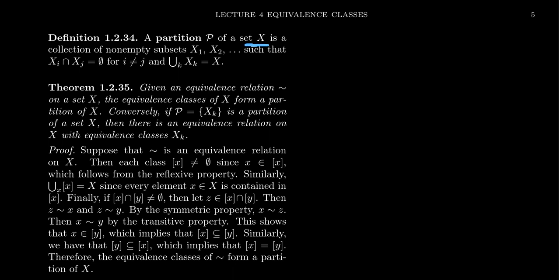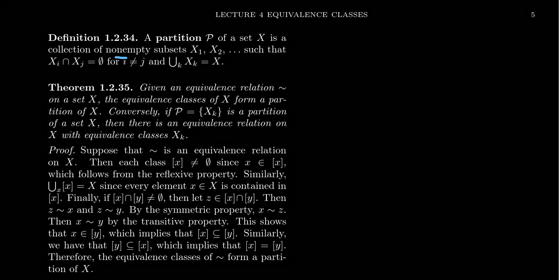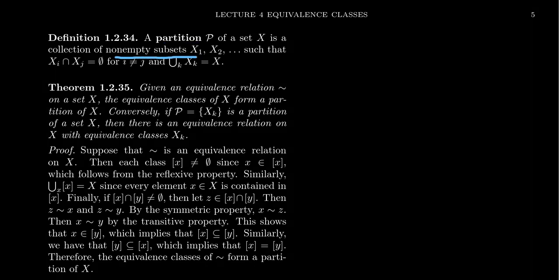So let's say we have a set in play here — this could be a finite set, it could be an infinite set, it doesn't matter. We have a set X and we define a partition on X in the following way. We have a collection of non-empty sets X1, X2, X3, and so on. These are going to be subsets of X. Each X sub K will be a subset of X, and they are non-empty, so every set contains something.